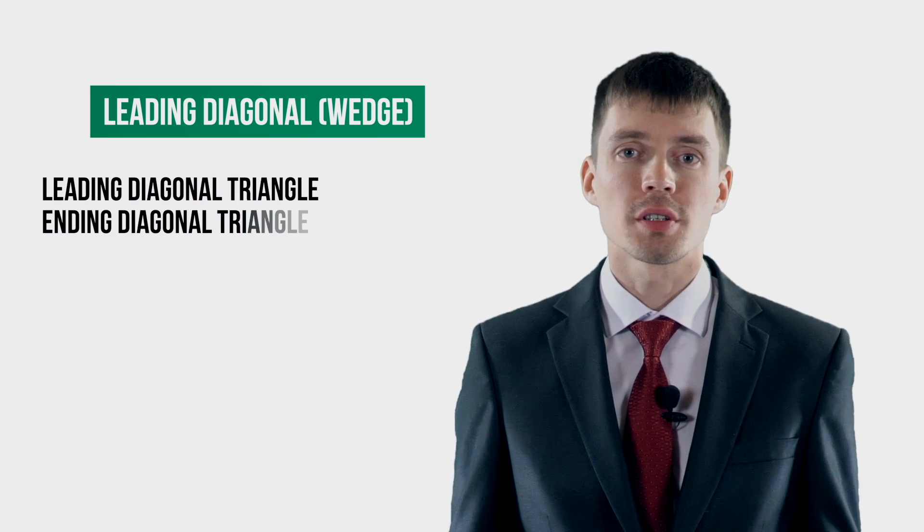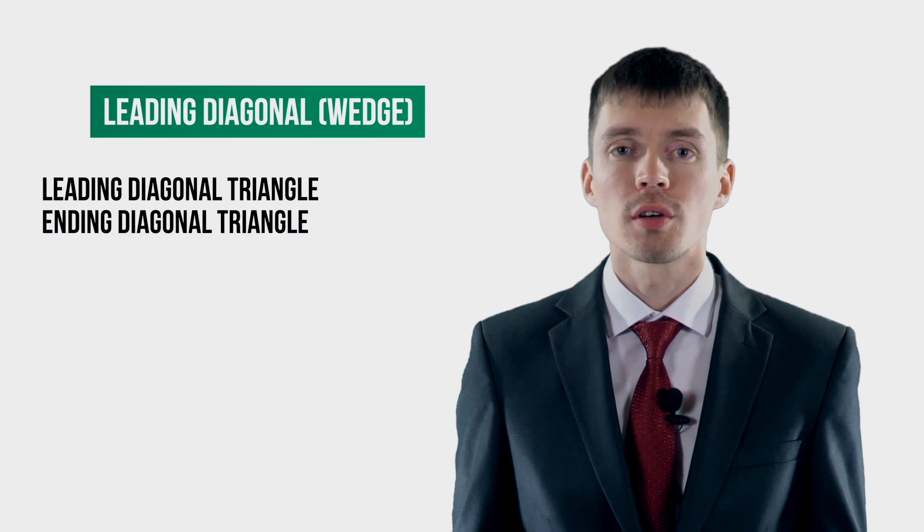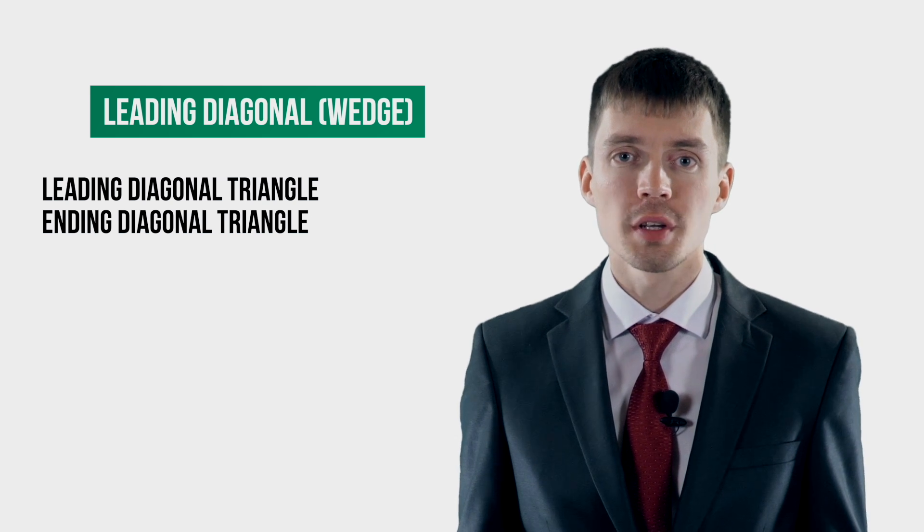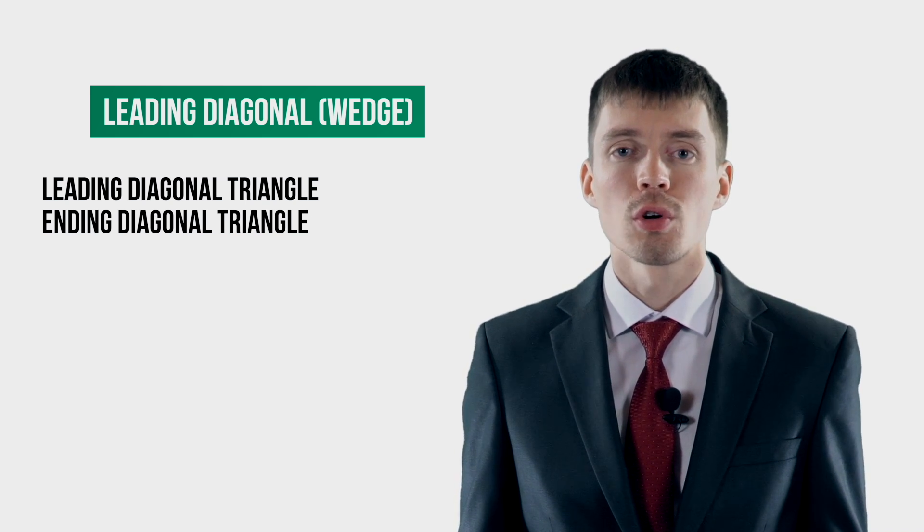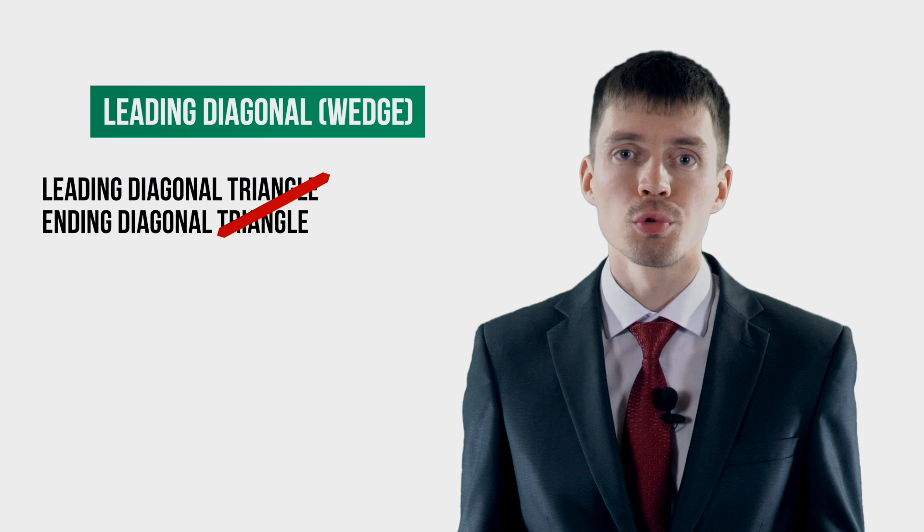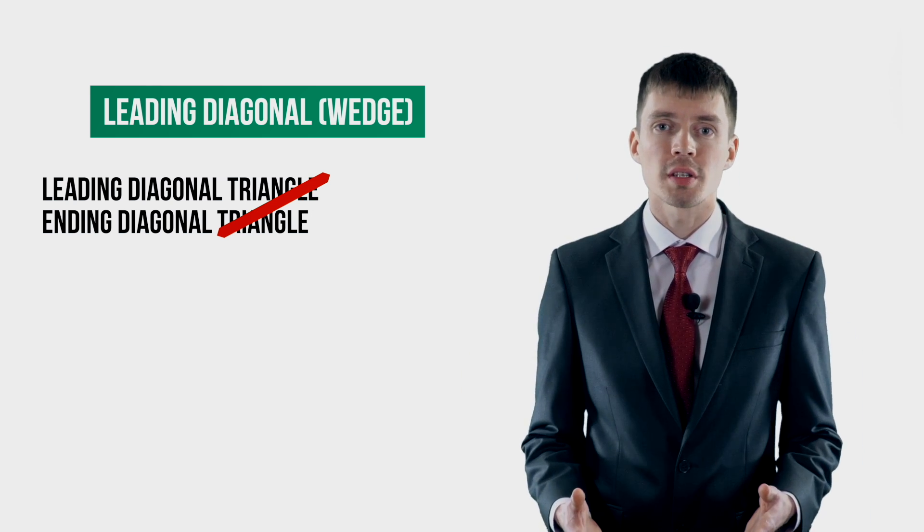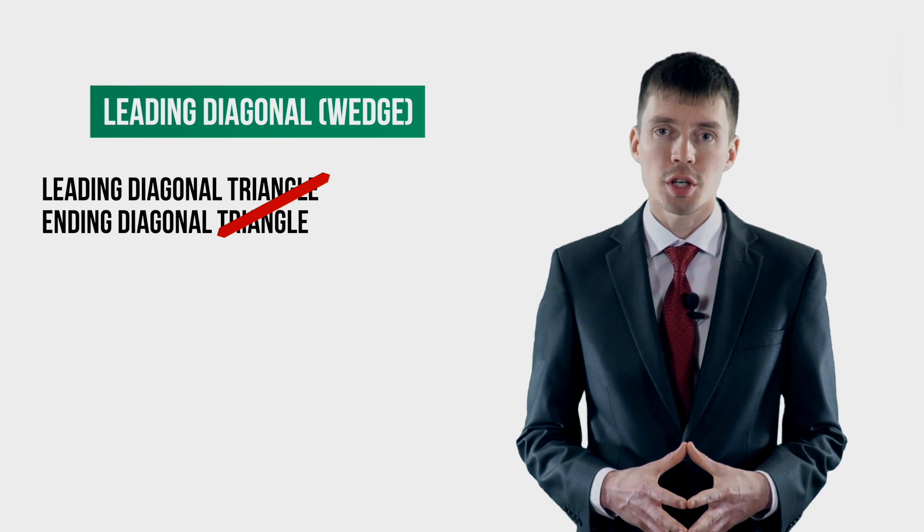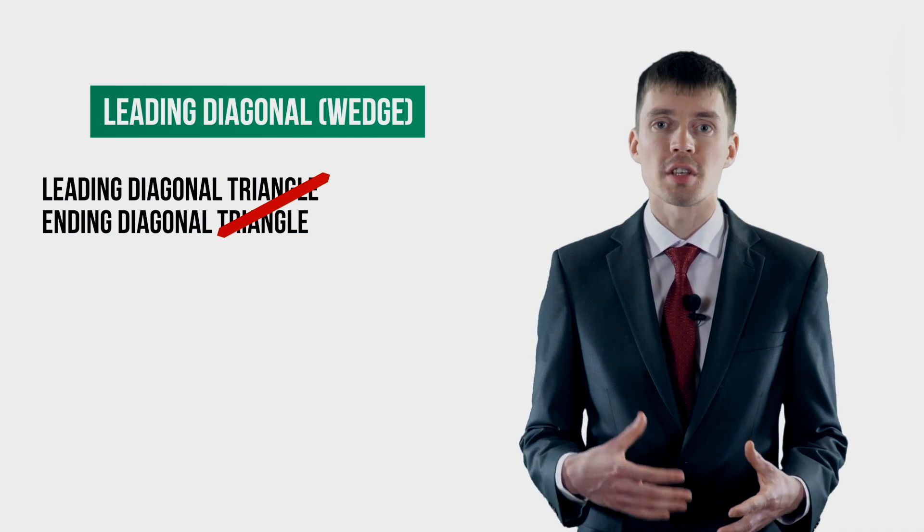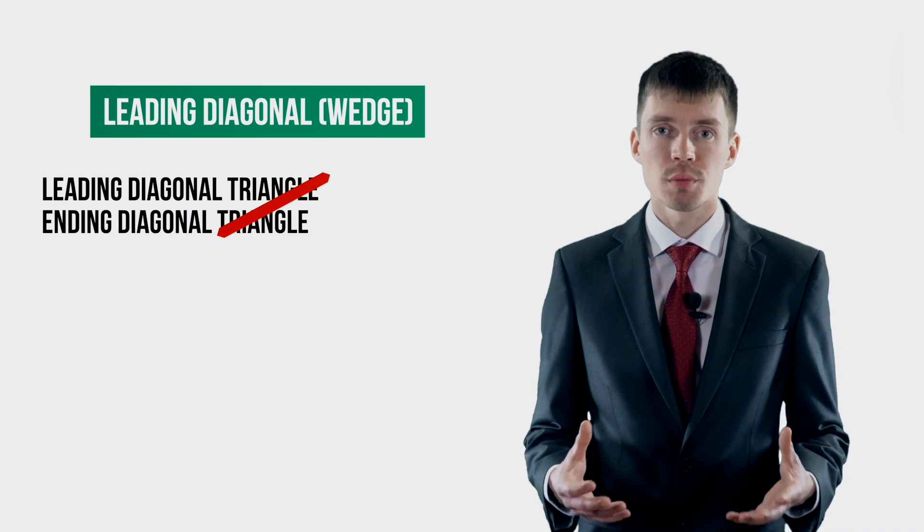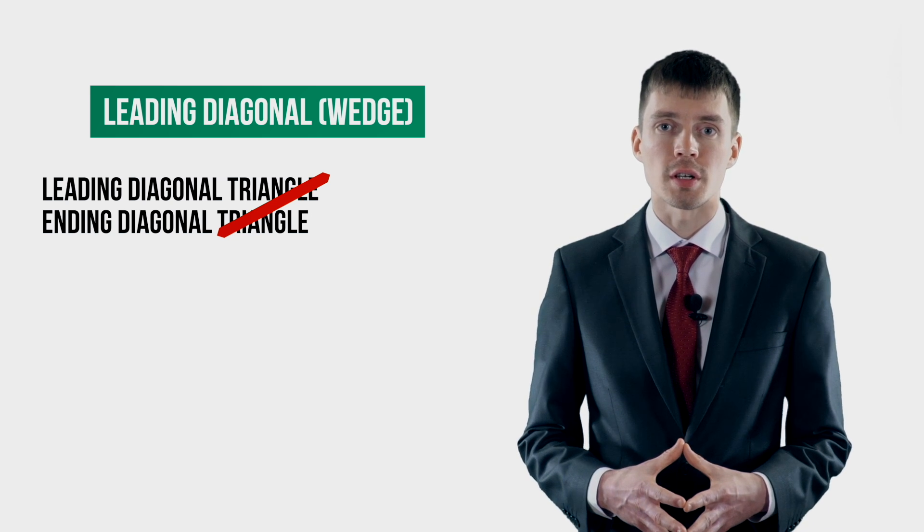It should be noted that earlier these models were called diagonal triangles, but then Robert Prechter, a world famous specialist in wave analysis, removed the word triangle from the name of the diagonal to avoid confusion among beginners who sometimes mistakenly attributed diagonals to the family of triangles.